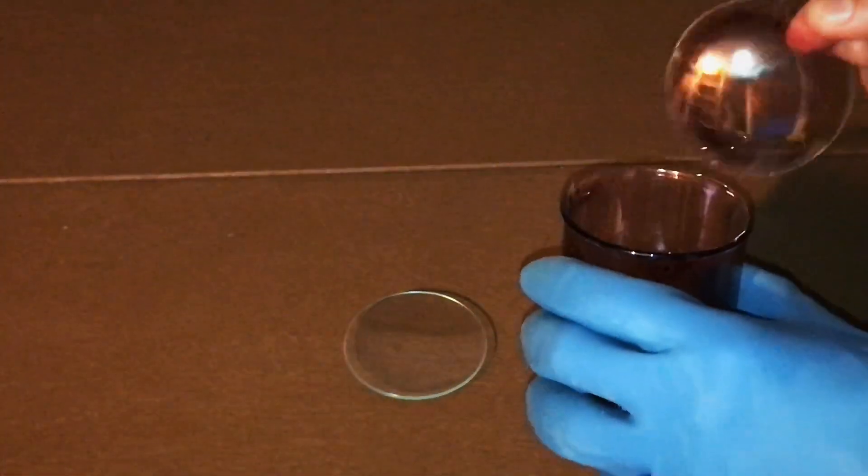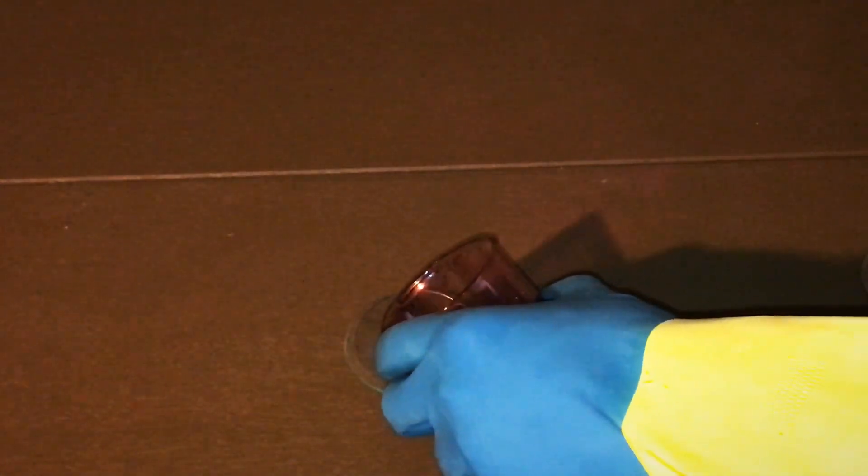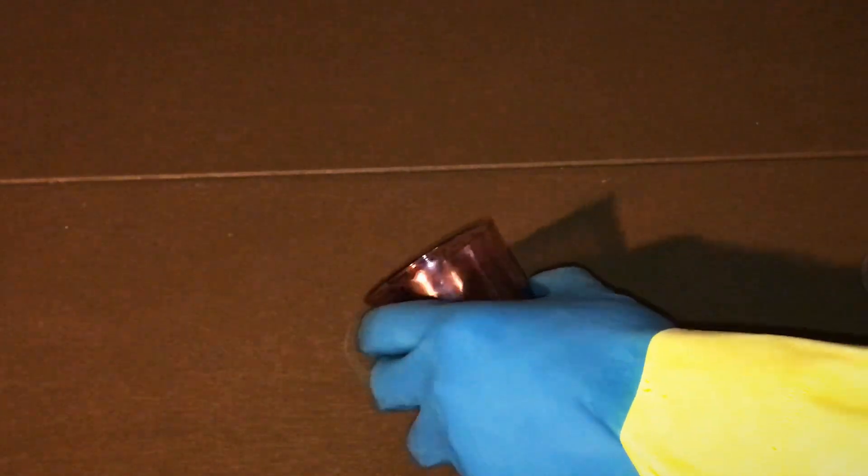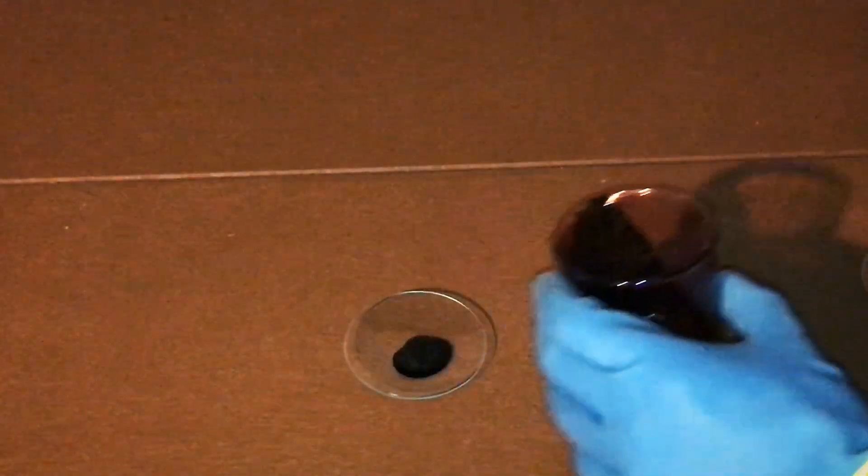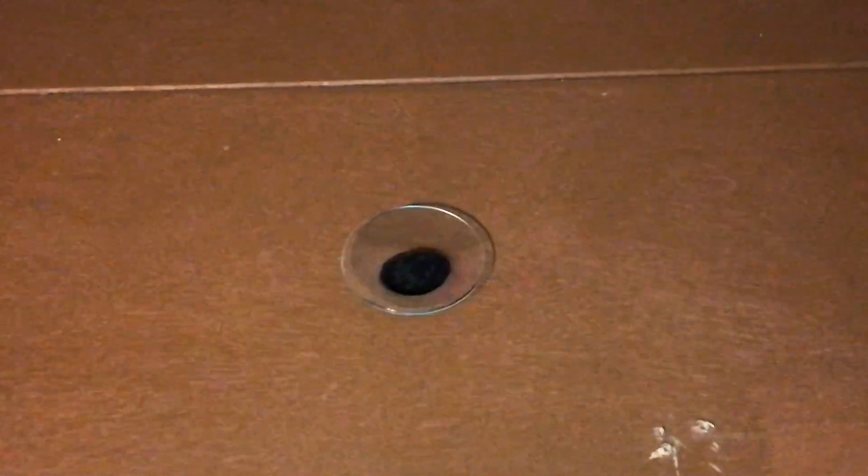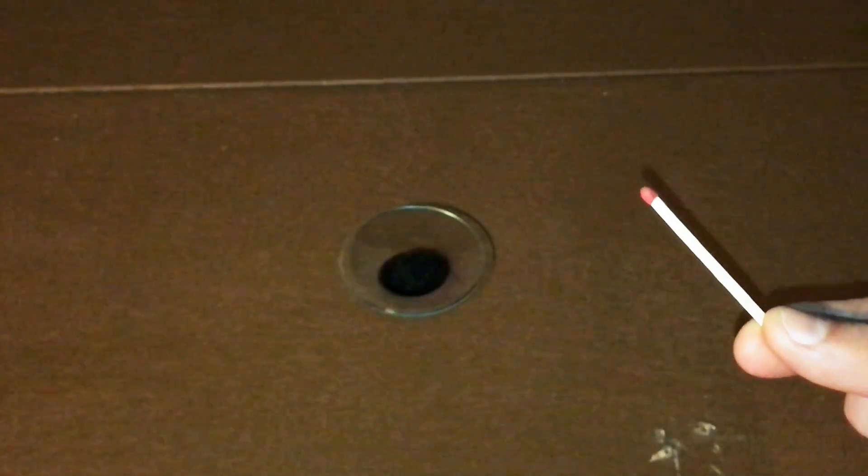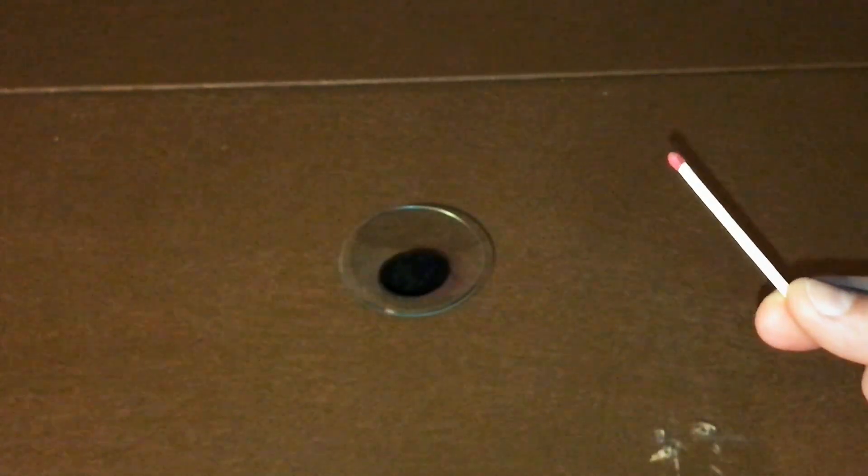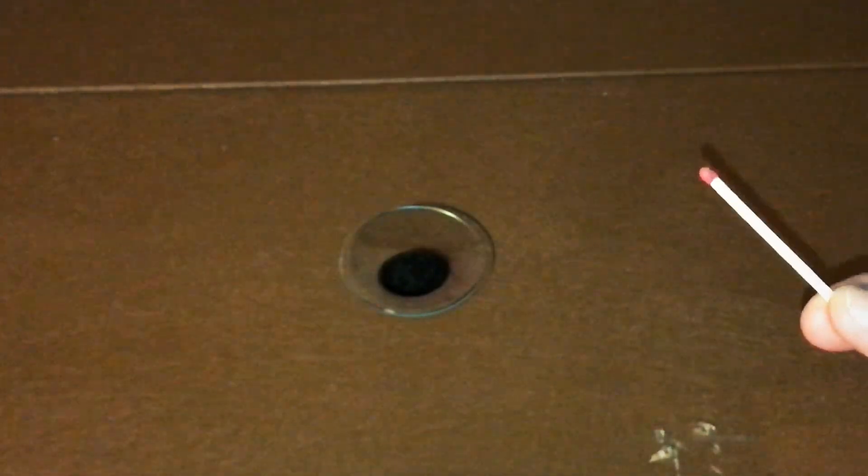Okay, so for the first reaction, what I'm going to do is I'm going to pour a little bit of the manganese heptoxide onto this watch glass here. Just a little bit. So for the first reaction, I'm going to introduce a match stick. The match head contains potassium chlorate and other traces of red phosphorus and sulfur. So let's see what happens.